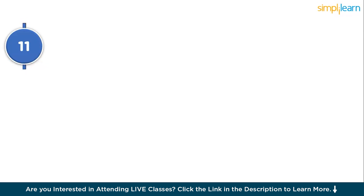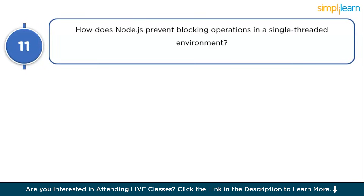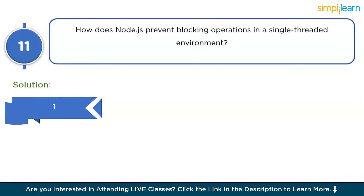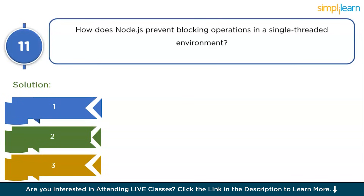Question 11: how does Node.js prevent blocking operations in a single-threaded environment? For event-driven architecture it uses async callbacks. For non-blocking I/O it uses libuv. For CPU-heavy tasks it uses worker threads. This is how Node.js prevents blocking operations in its single-threaded environment.